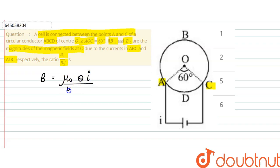So B is proportional to theta as well as current. So we can say that now...